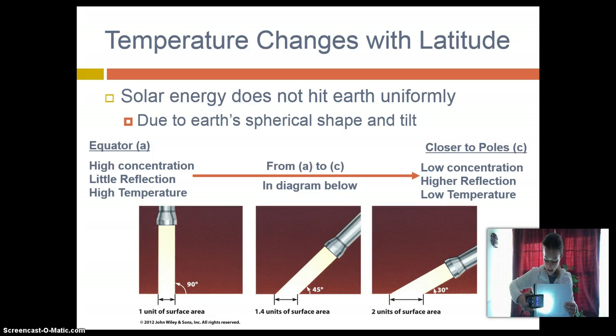Continue to decrease that angle, now that solar energy is spread out over an even greater surface area, there's less heat energy available at any one point, and you have cooler temperatures.